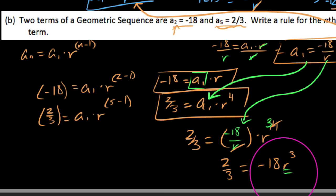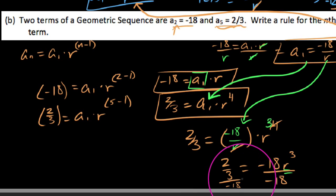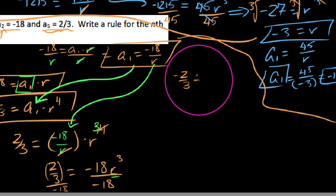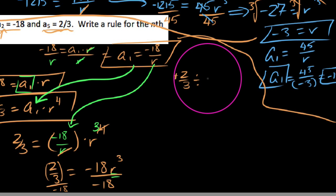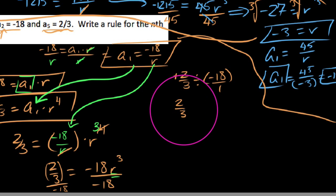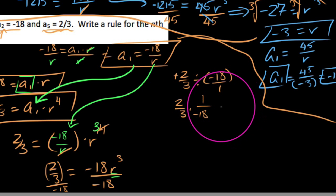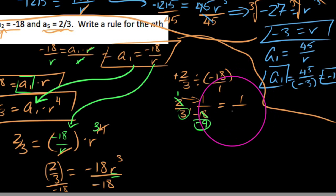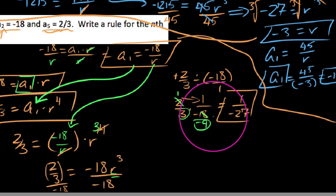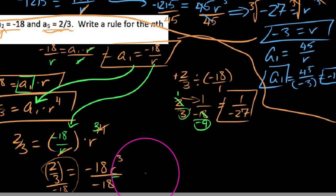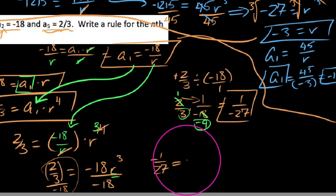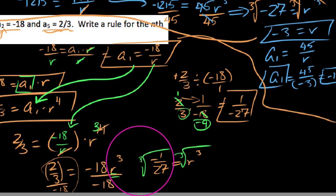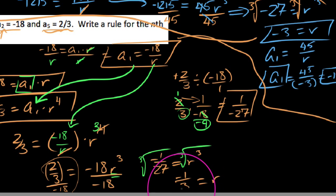Now we need to solve for r, so we divide both sides by negative 18. Dividing 2 thirds by negative 18 over 1 is the same as 2 thirds times 1 over negative 18. Cross-reducing, 2 and 18 become 1 and negative 9. So on top we get 1 times 1 is 1, and on the bottom 3 times negative 9 is negative 27. So we have negative 1 over 27 equals r cubed. Taking the cube root of both sides: the cube root of negative 1 is negative 1, and the cube root of 27 is 3. So r equals negative one third.